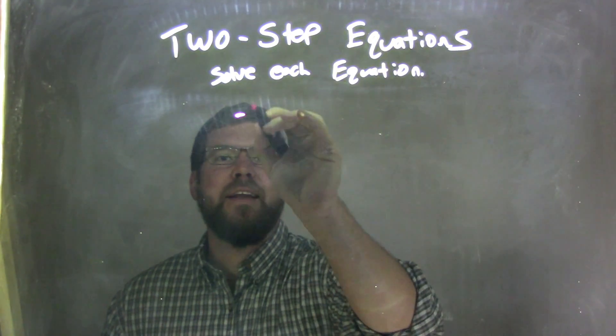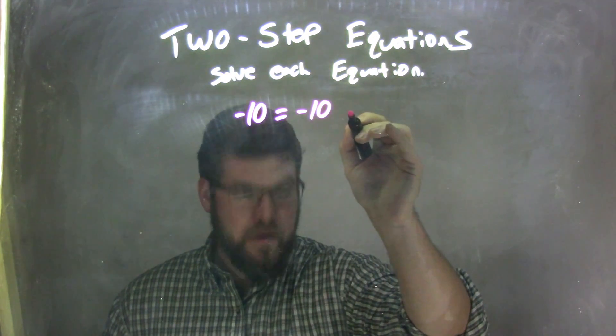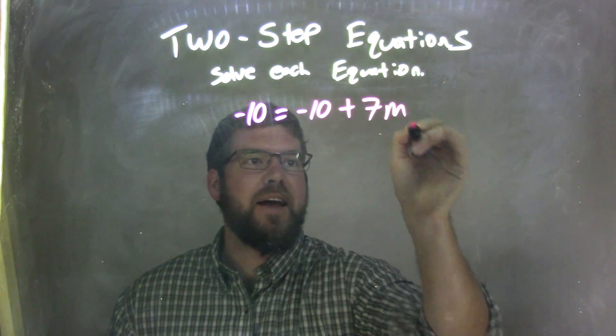So if I was given this equation: negative 10 equals negative 10 plus 7m.